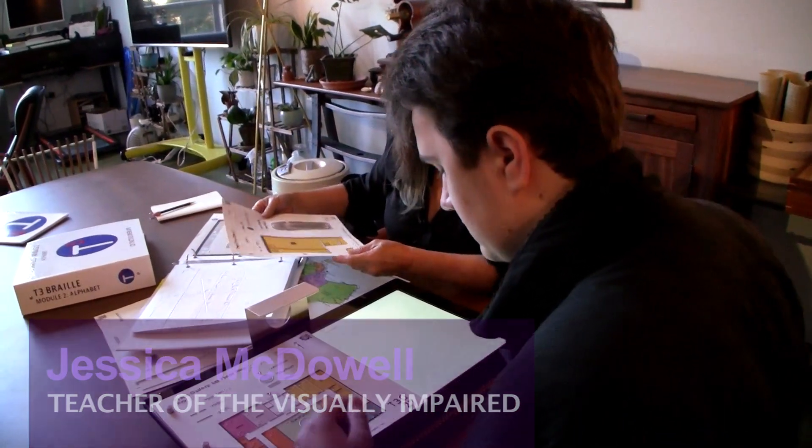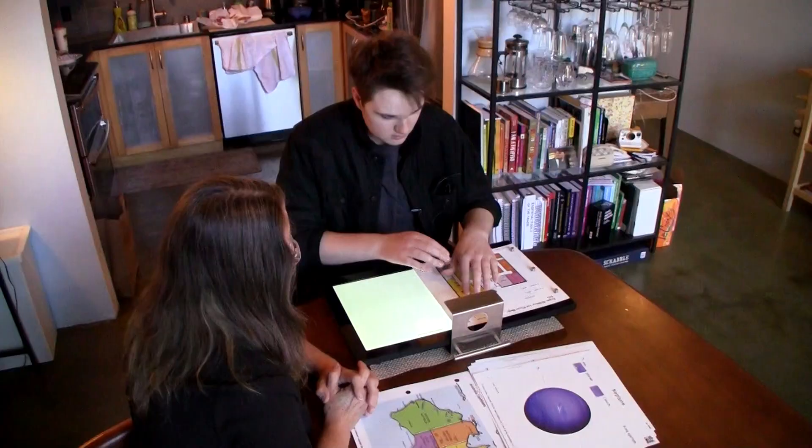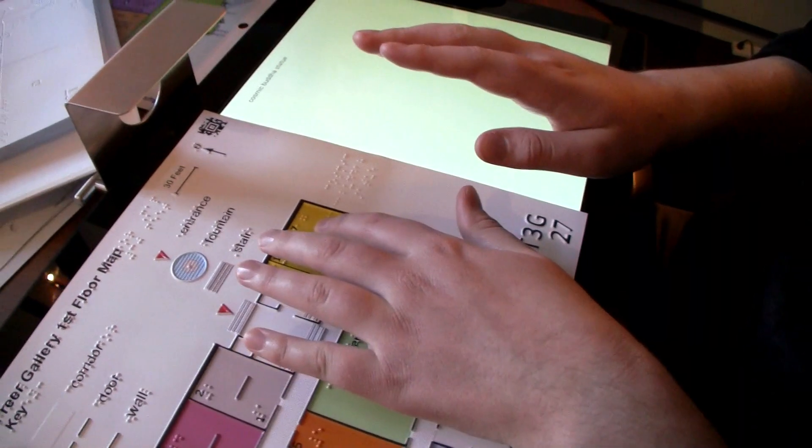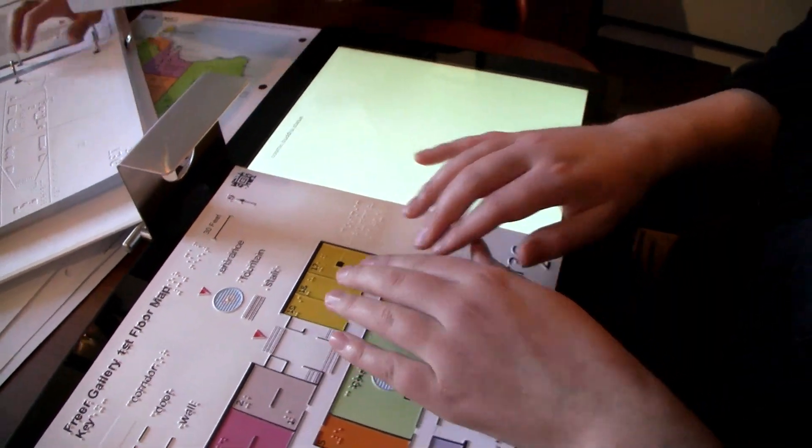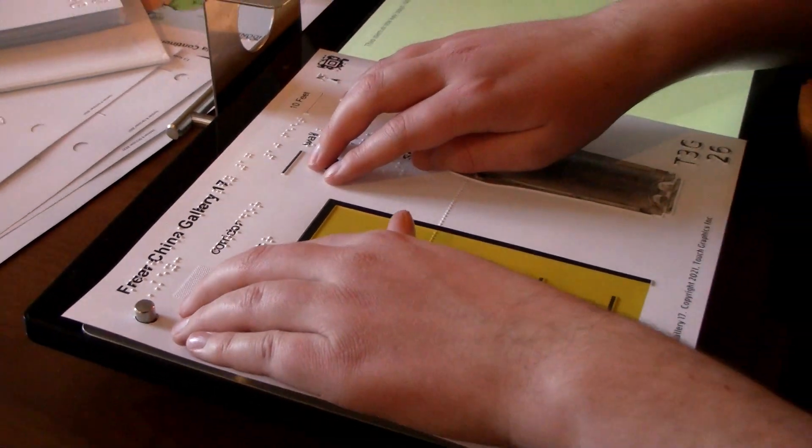Jessica McDowell, teacher of the visually impaired. Can you find the room 17 where that little square representing the statue is? 17. Nice. Cosmic Buddha statue. Yeah, nice. Now I'm going to give you, we're going to zoom in a level. Okay. So, this is full statue.